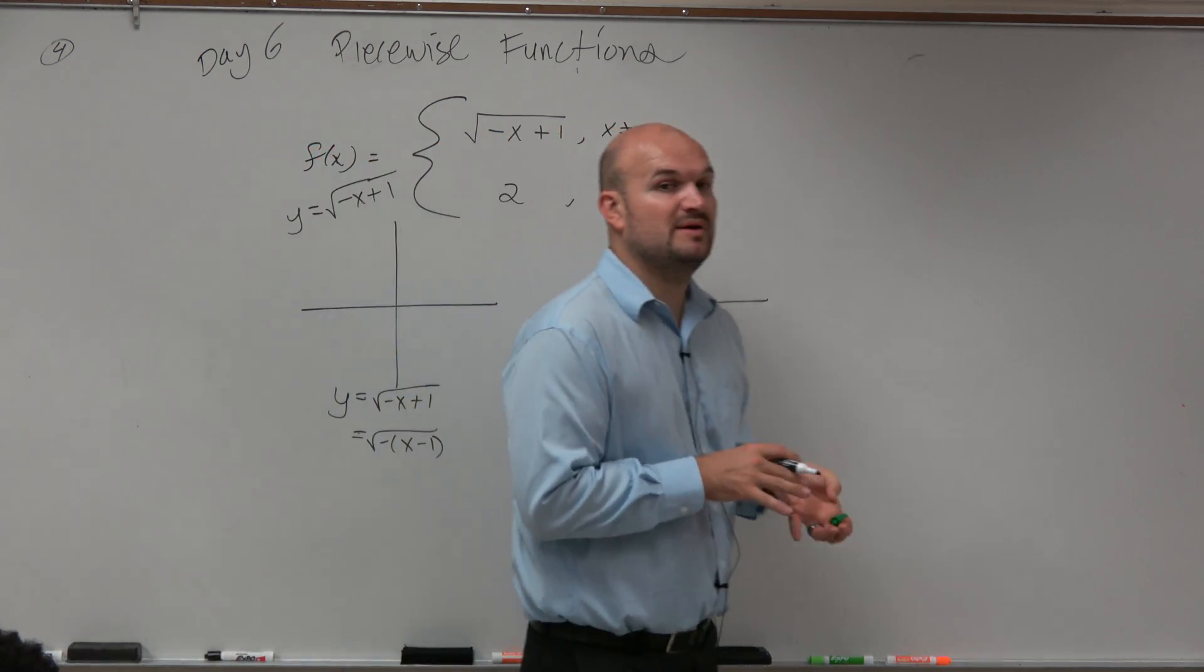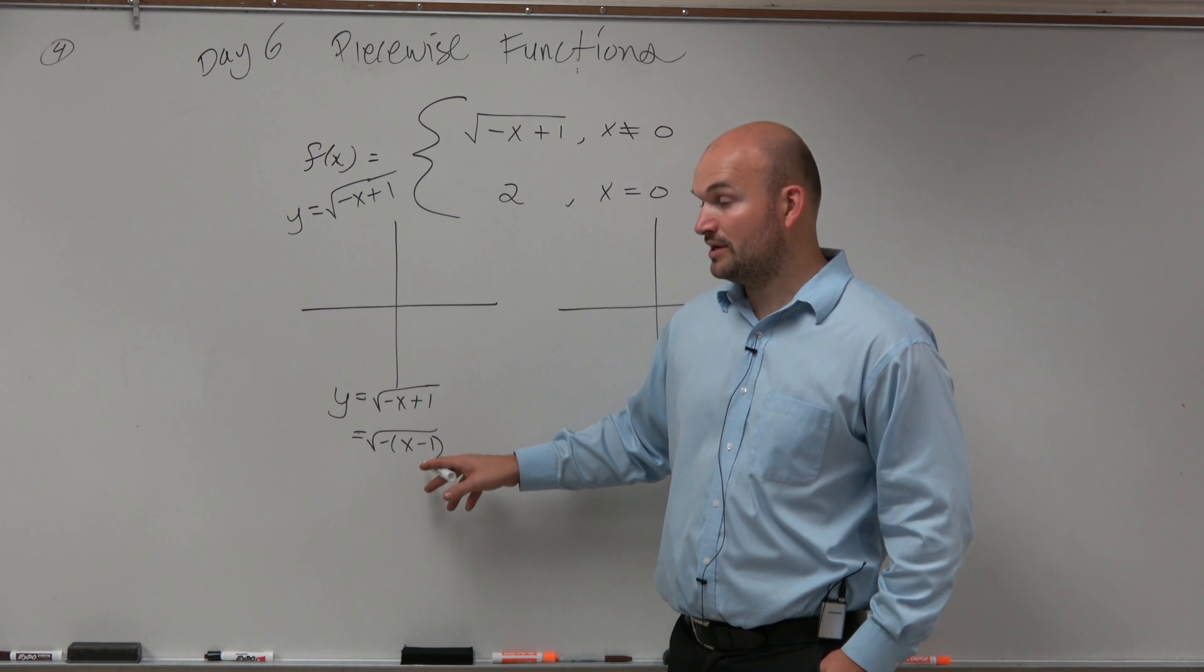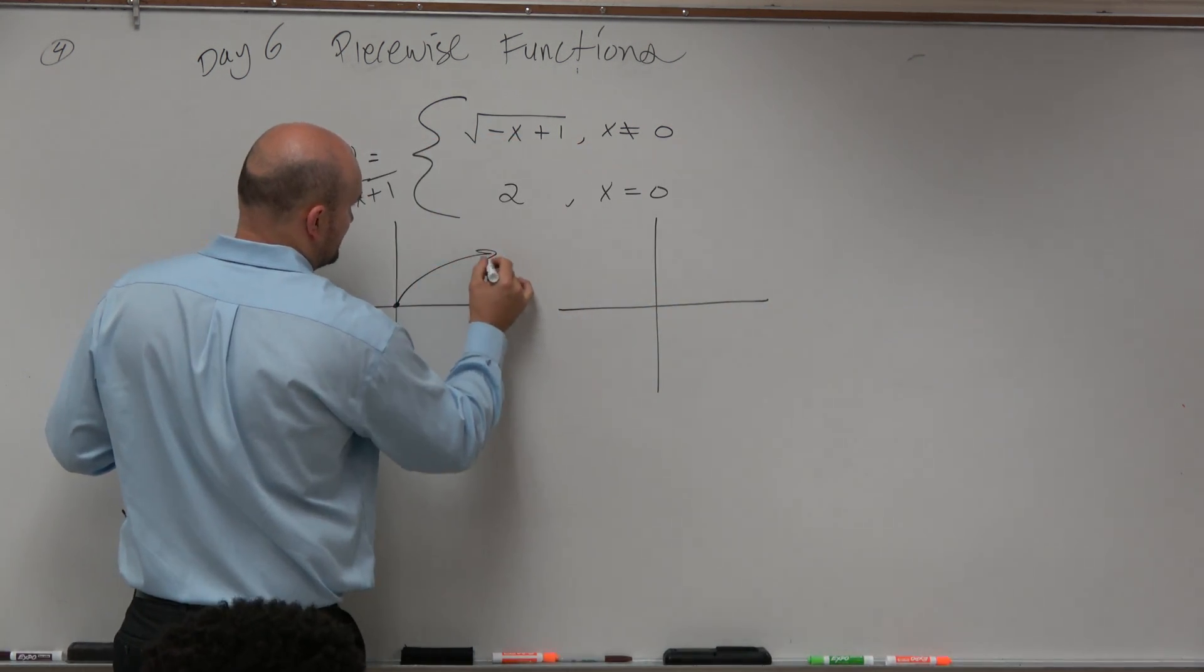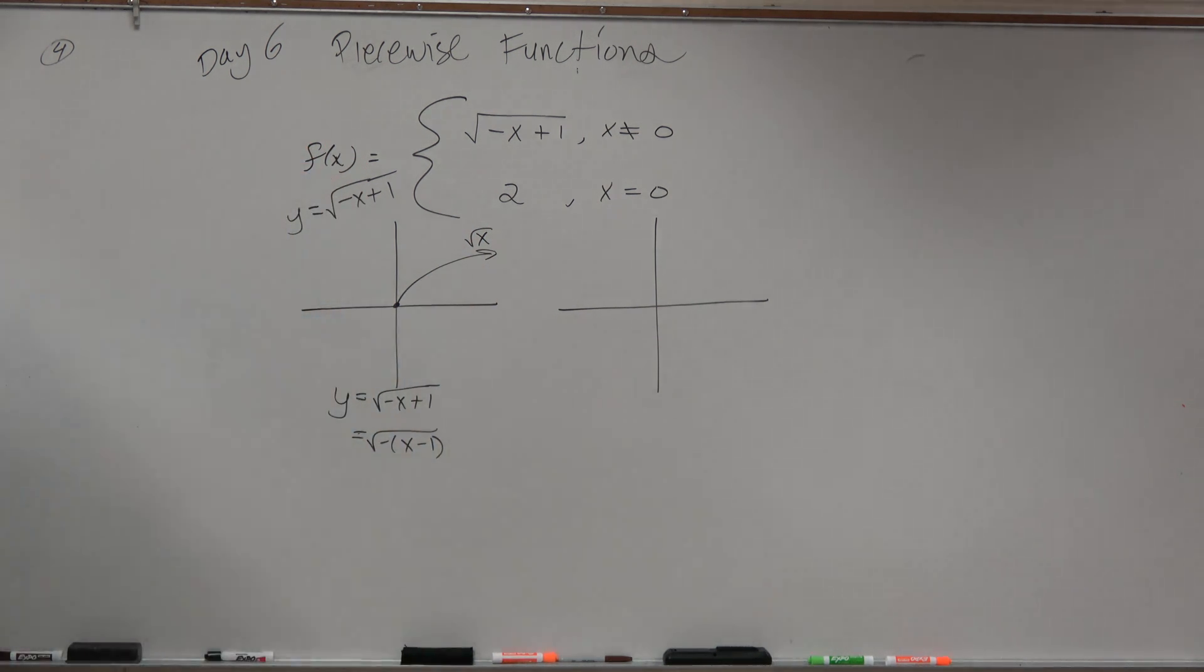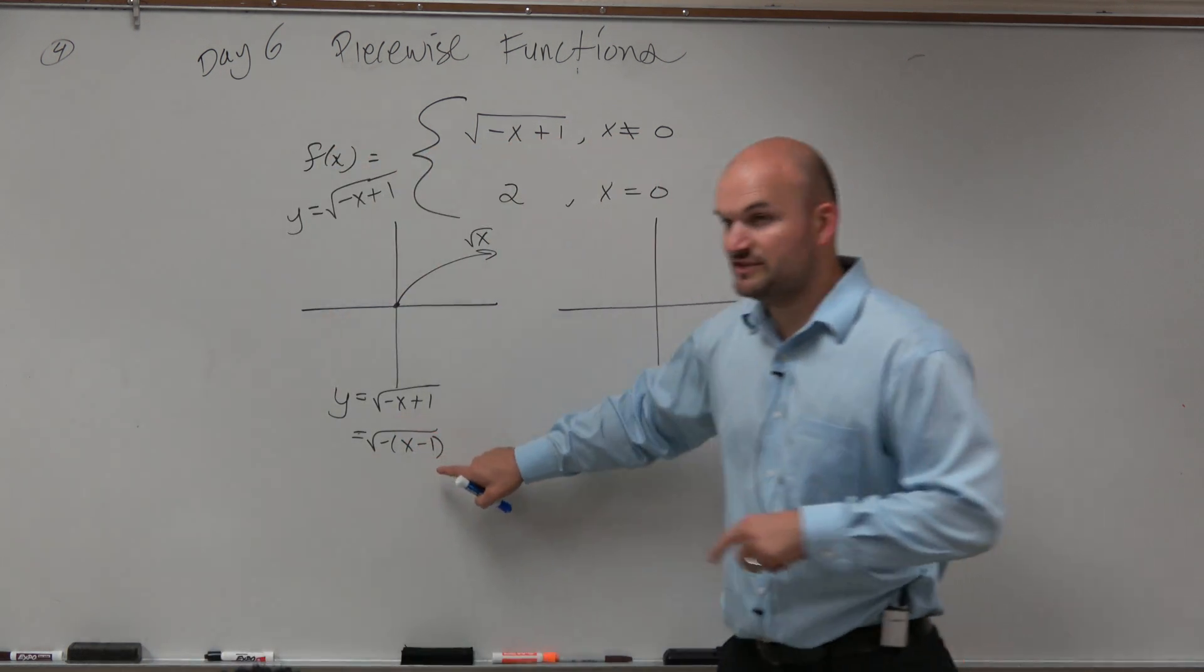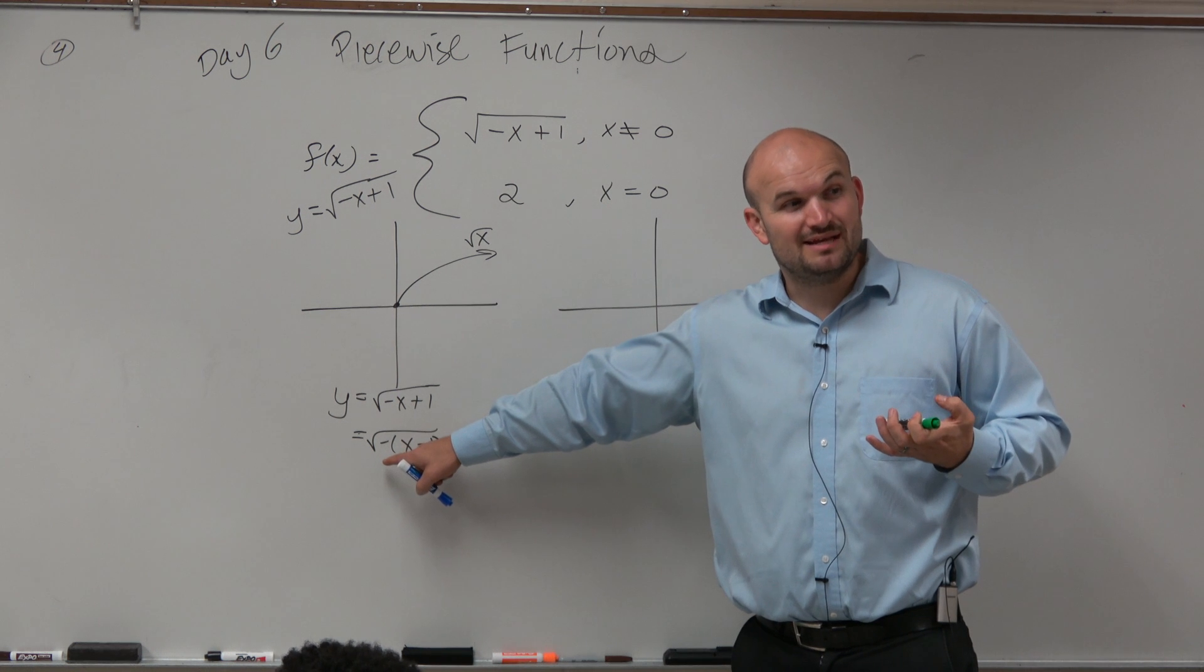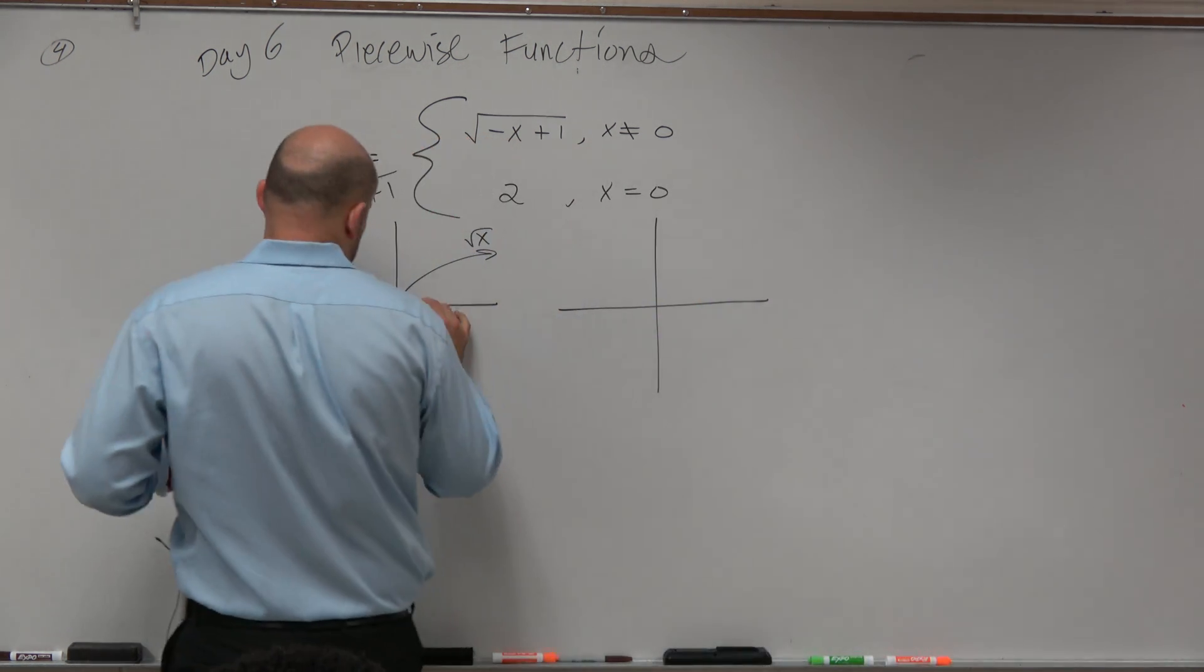Now that we've factored out the b, we realize it's being shifted right to 1. Now, again, we need to know what the function looks like. Here's the parent function, square root of x. So, if that's the parent function, the transformed function is being shifted one unit to the right, and it's being reflected, because that's b. Remember, b reflects about the y-axis. So, the graph looks something like this.